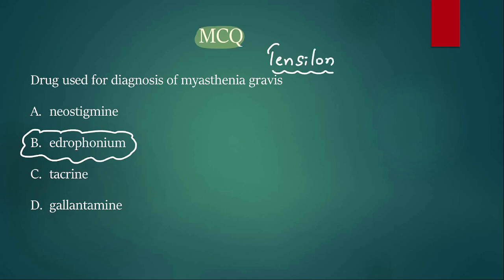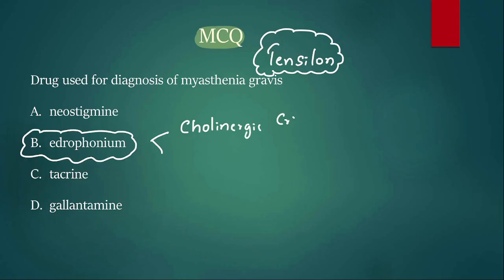The commonly used drug for myasthenic crisis diagnosis is edrophonium. Edrophonium is also used to differentiate cholinergic crisis versus myasthenic crisis.